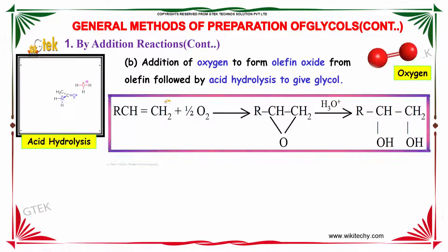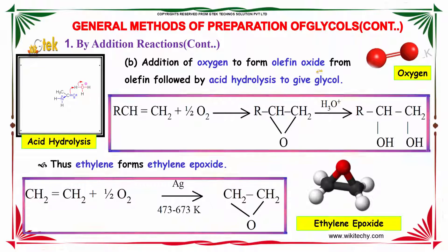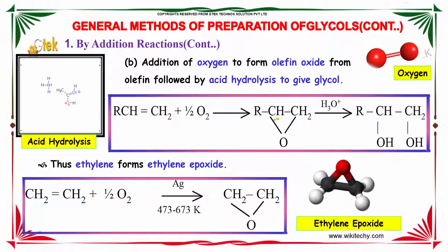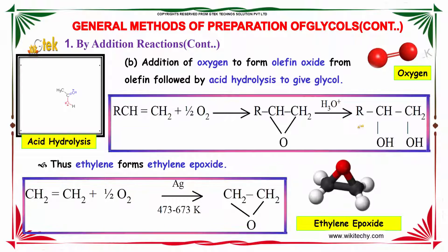The second method is by the addition of oxygen to form an olefin oxide from an olefin, followed by acid hydrolysis to give glycol. Ethylene is taken and reacted with half a mole of oxygen to form an olefin oxide, which is a cyclic compound. On further acidic hydrolysis (H3O+), glycols are formed. Ethylene thus forms ethylene epoxide.